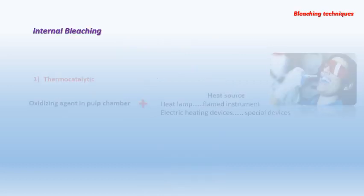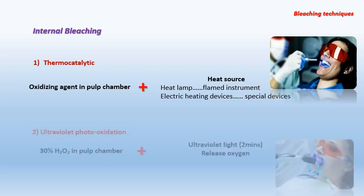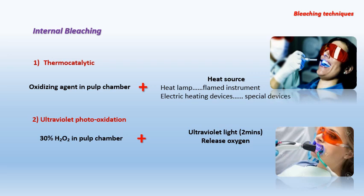Regarding internal bleaching, the bleaching agent is applied into the access cavity in the pulp chamber, and then a heat source is applied over the tooth to activate the bleaching agent. This results in the production of oxidizing molecules. The heat source may be a heat lamp, a flame, a flame instrument, or a special electric device made for this purpose.